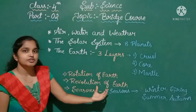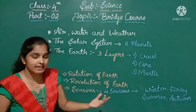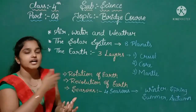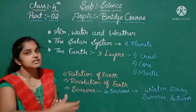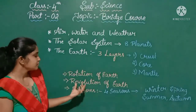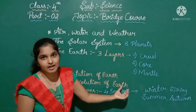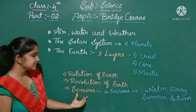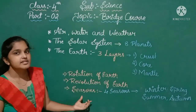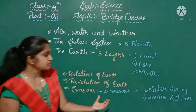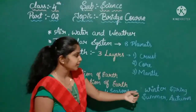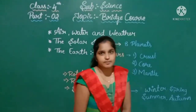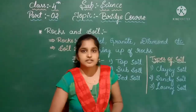Next is the revolution of the Earth. Revolution of the Earth is nothing but the movement of the Earth around the sun. This revolution of the Earth causes seasons. There are four seasons — winter, spring, summer, and autumn season.